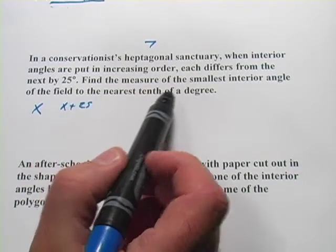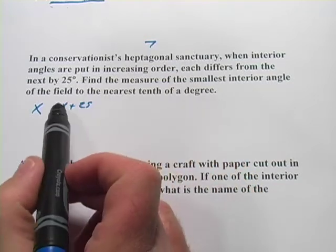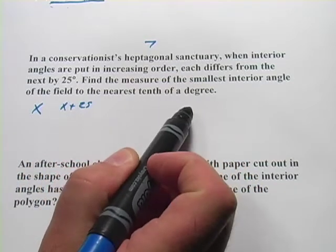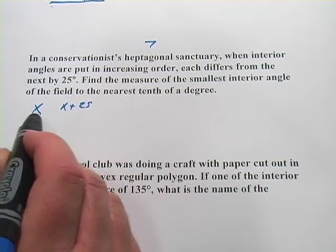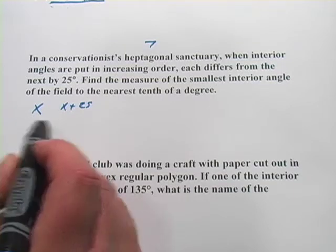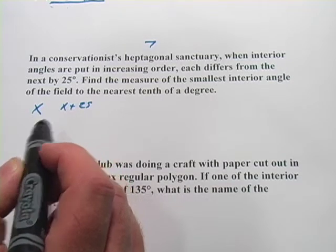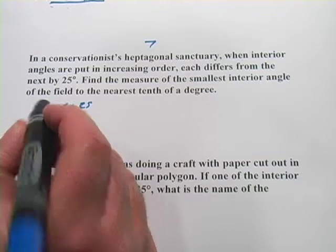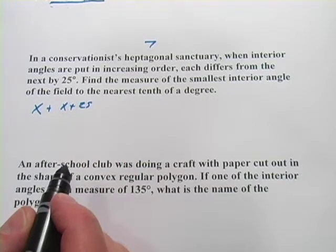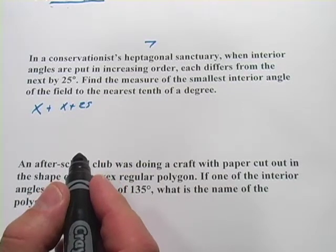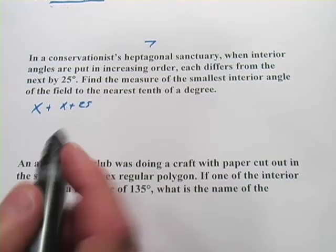Then it says, find the measure of the smallest interior angle of the field to the nearest tenth of a degree. So we want to find x then. This is our smallest angle, that's our next biggest. We're going to add up all the angles and then use our formula for the sum of the interior angles of a polygon.